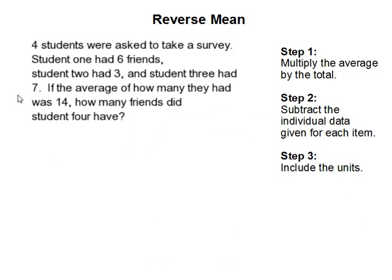Reverse mean. Four students were asked to take a survey. Student 1 had six friends, student 2 had 3, and student 3 had 7. If the average of how many they had was 14, how many friends did student 4 have?